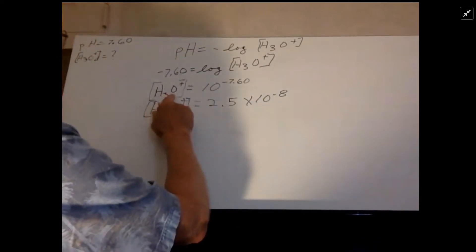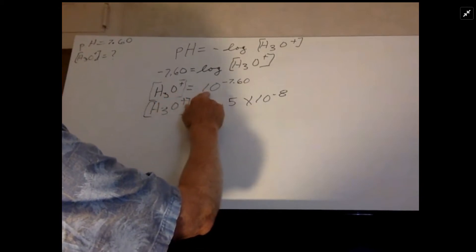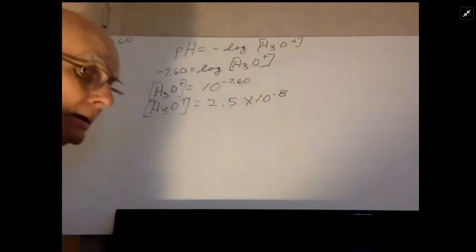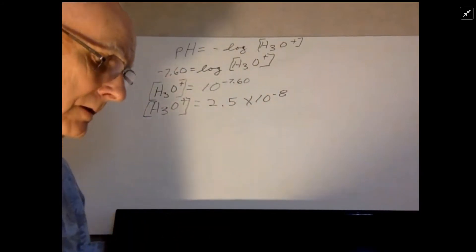So we can say that the H3O+ concentration is equal to 10 to the negative 7.60, and if you punch that into your calculator.